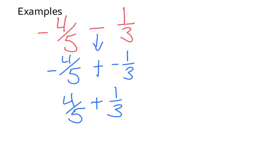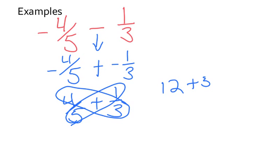And I'm going to bowtie since I don't have a common denominator. 4 times 3 is 12, 5 times 1 is 5, all over 5 times 3 is 15. 12 and 5 equals 17 over 15.